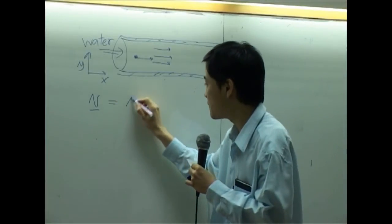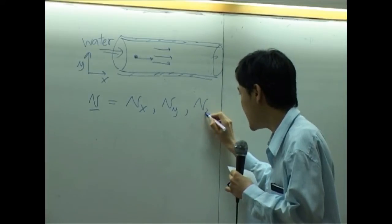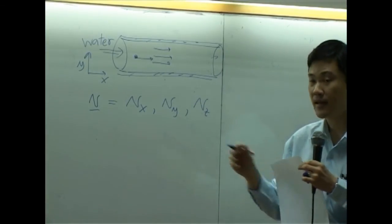So it is consisting of Vx, Vy, and Vz component in Cartesian.